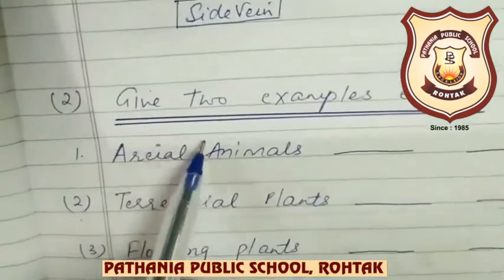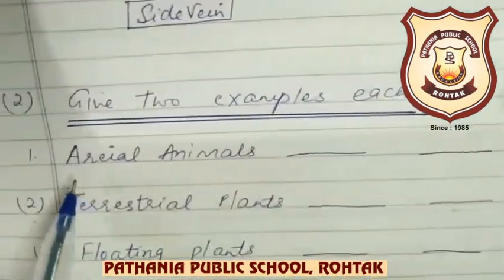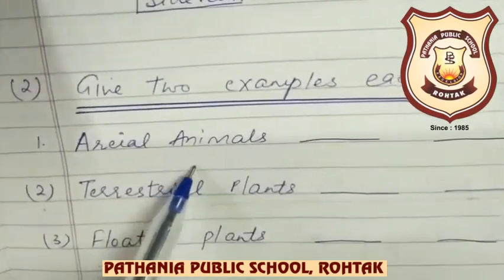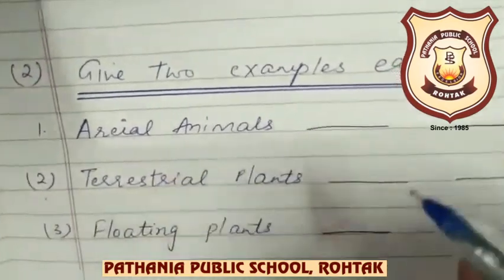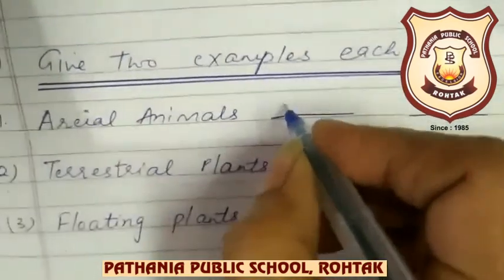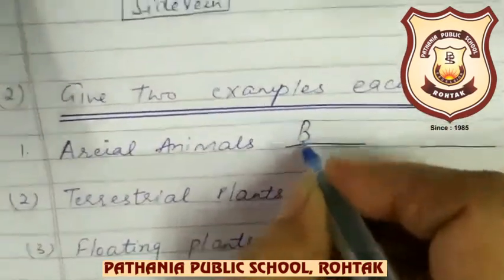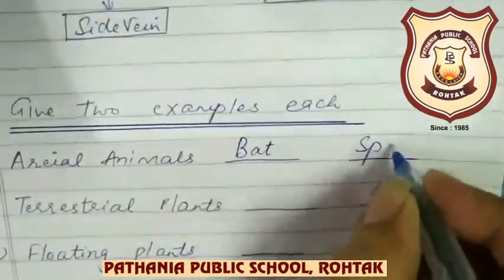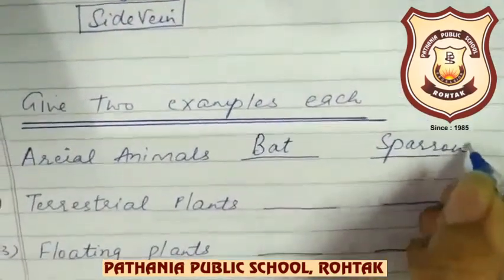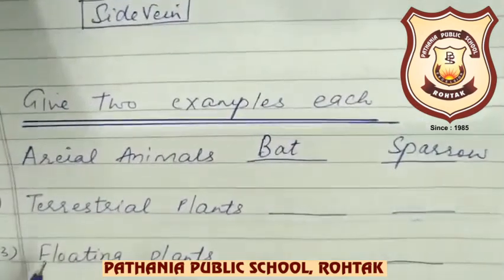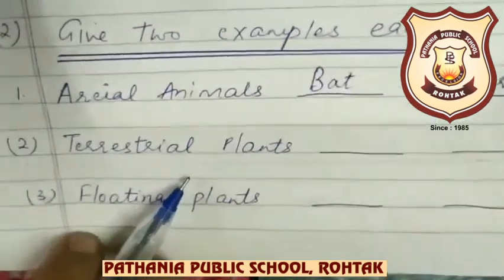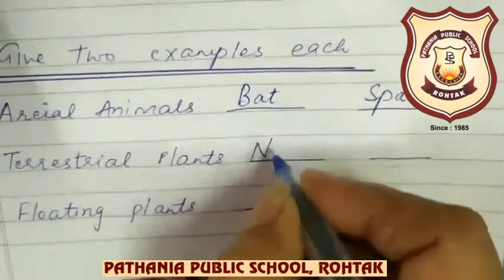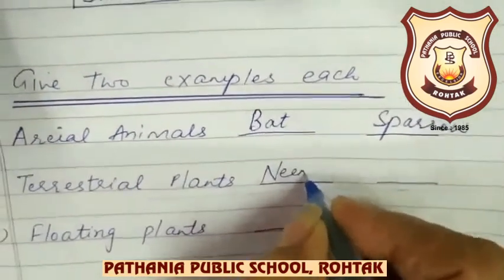Give 2 examples each. First, aerial animals — you have to give the example of aerial animals. You can write anyone: Bat, Sparrow. These are animals that can fly in air.